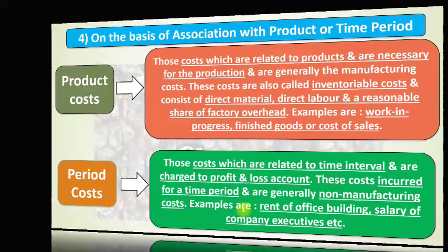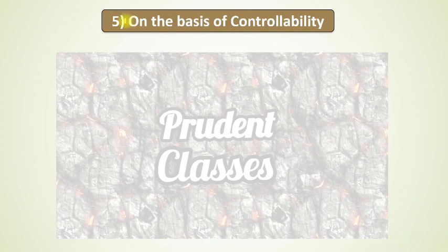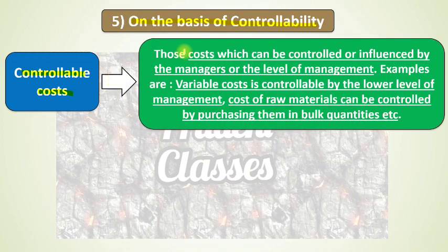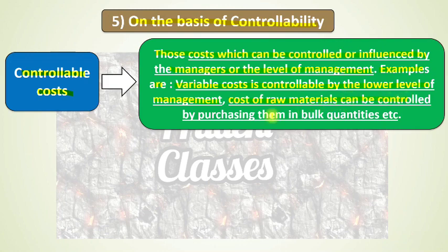Basis number five classifies cost on the basis of controllability. Costs can be categorized as controllable or uncontrollable. Controllable costs are those which can be controlled or influenced by managers or the level of management. Variable costs are a good example of controllable costs, as lower-level management is responsible for them. Cost of raw materials can also be controlled, for example by purchasing in bulk.